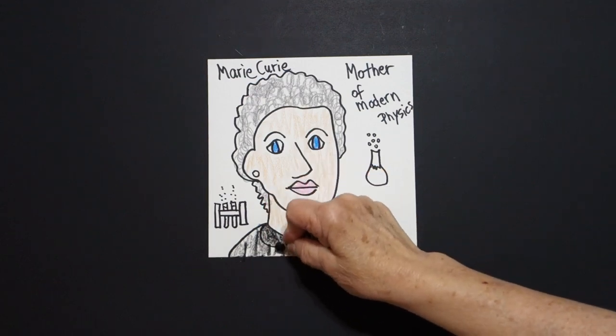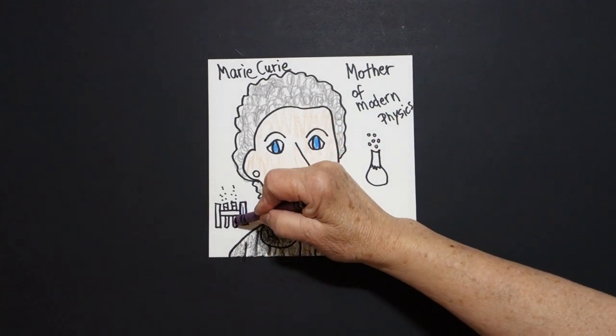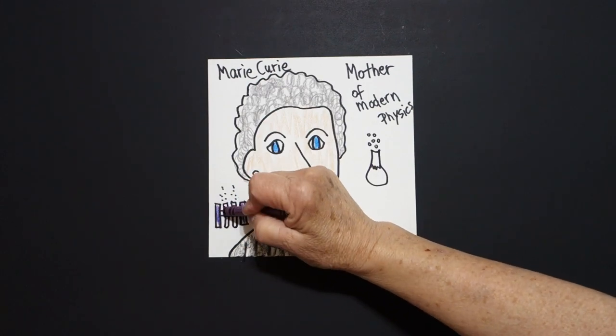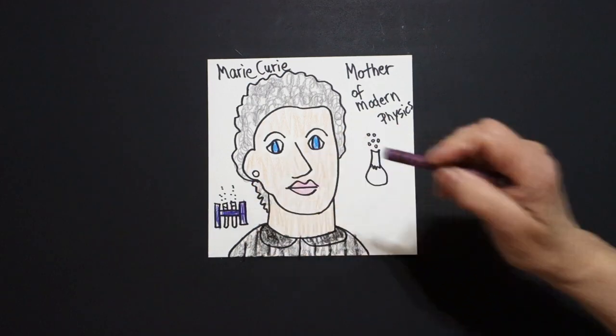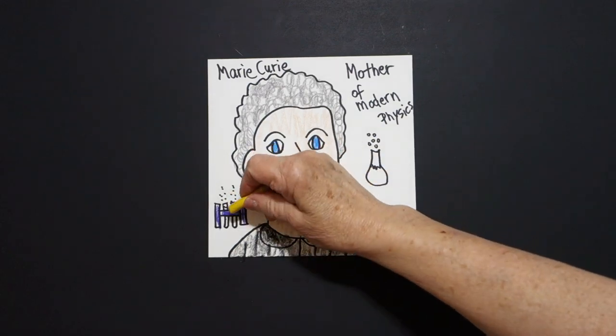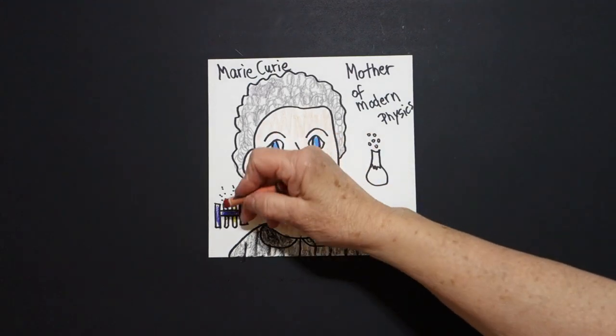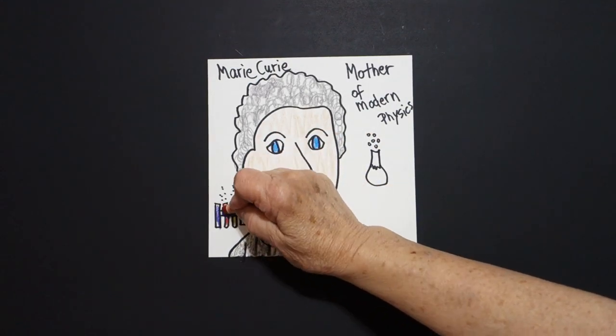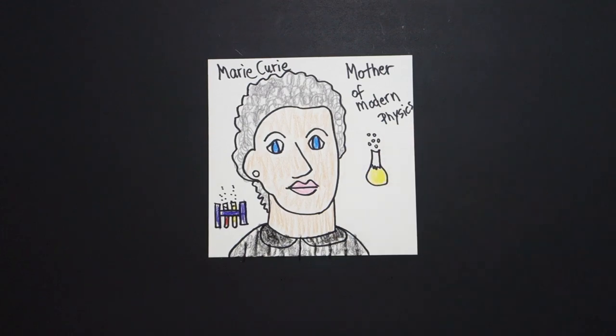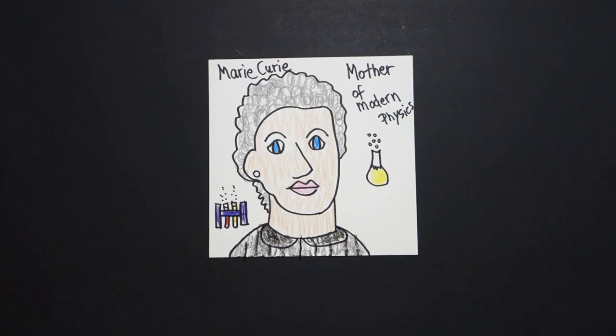And, again, I'm taking artistic license. These are those lab holders that hold test tubes, because she won the Nobel Prize in Chemistry. So there's her test tubes. We'll fill them in with liquids. Yellow. Maybe. I have no idea. And some red. Again, I have no idea. And I'll put yellow in this bottle over here. Okay. Let's see what this looks like all colored in.